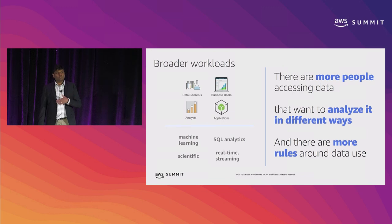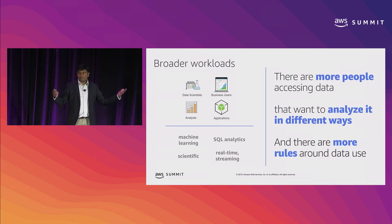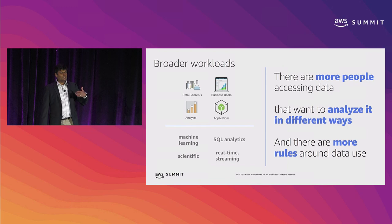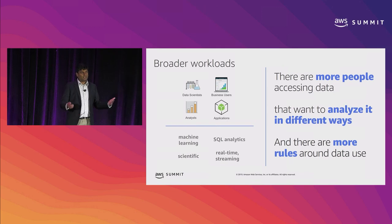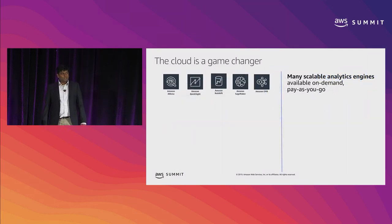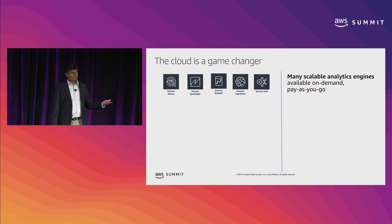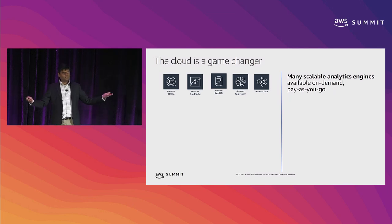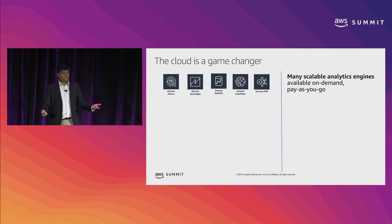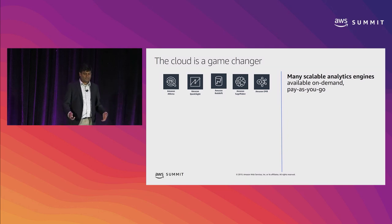Finally, there are a lot more rules around who can access data and when — regulatory requirements, GDPR, and governance policies across organizations depending on department and role. The good news is we have the AWS cloud, and it's been a game changer. You get to choose which analytics engine to use — it's not just one SQL data warehouse. You can pick Redshift, Amazon SageMaker for machine learning, EMR for big data analysis, QuickSight, or Athena for ad hoc analytics — all available on demand and pay-as-you-go.